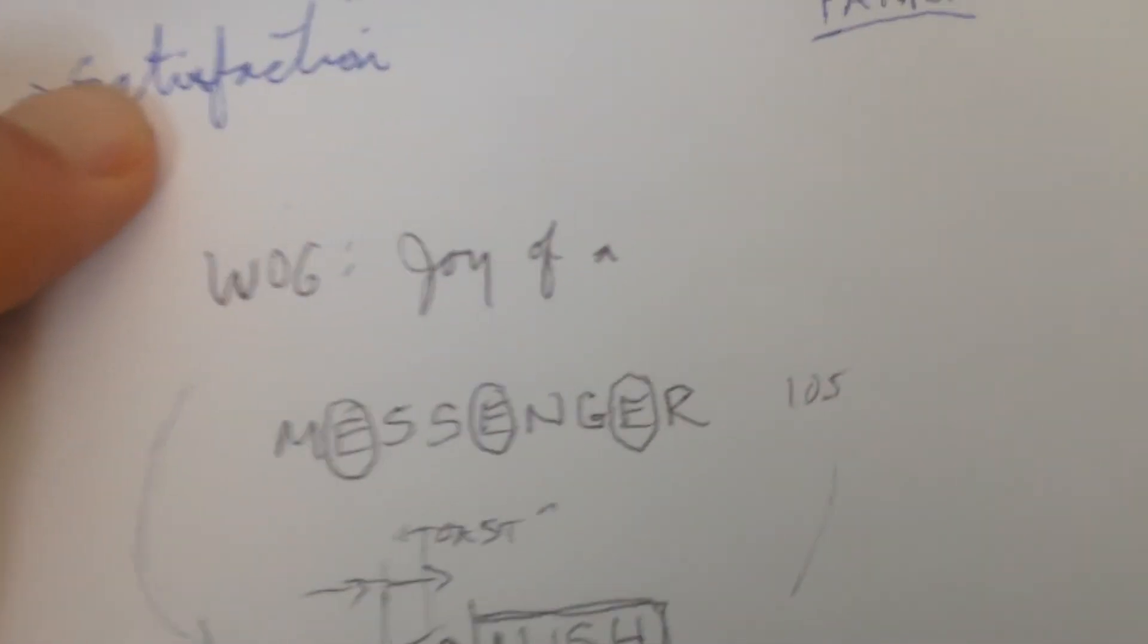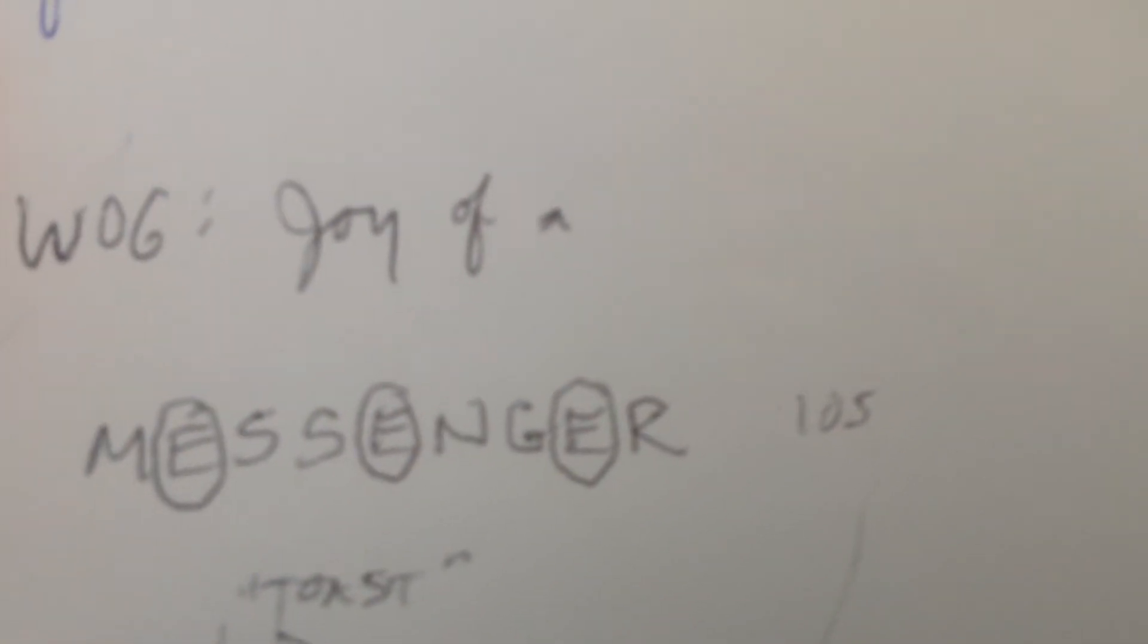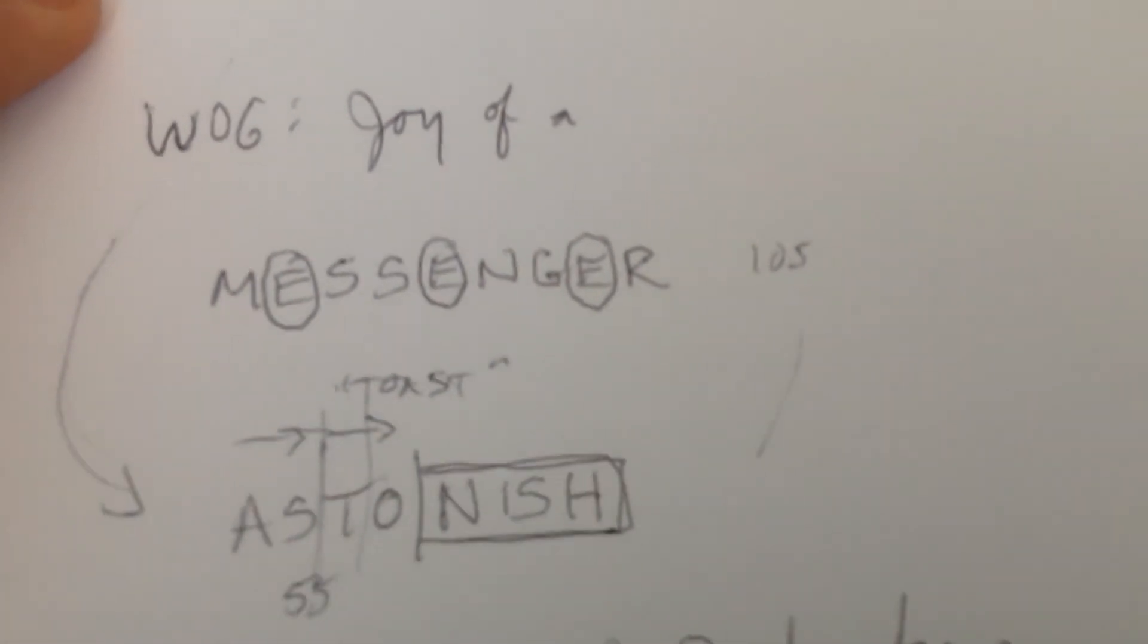Other words from the Lord: the joy of a messenger. Just look at the mathematical fives in that. The whole thing equals the great 105, a king joy number. Look at the three fives in symmetry. The joy of a messenger.